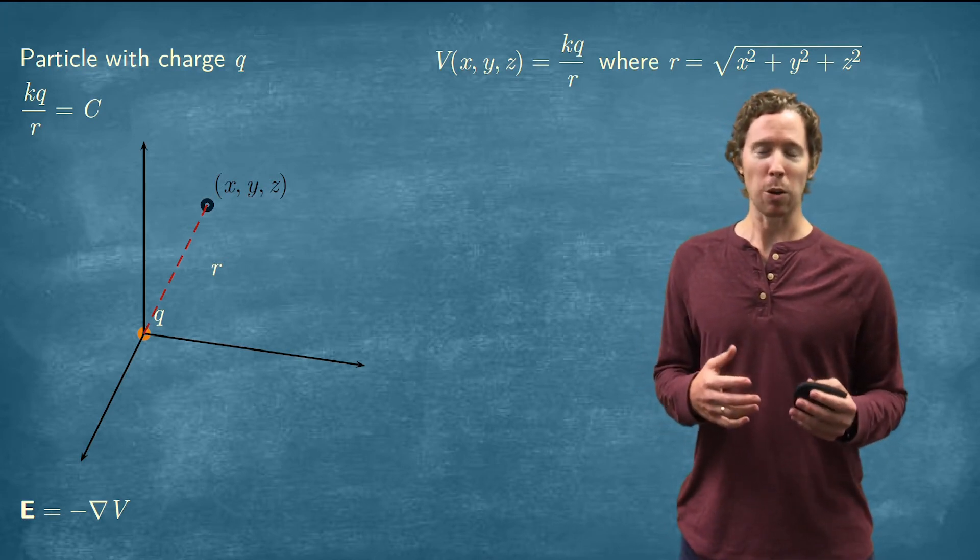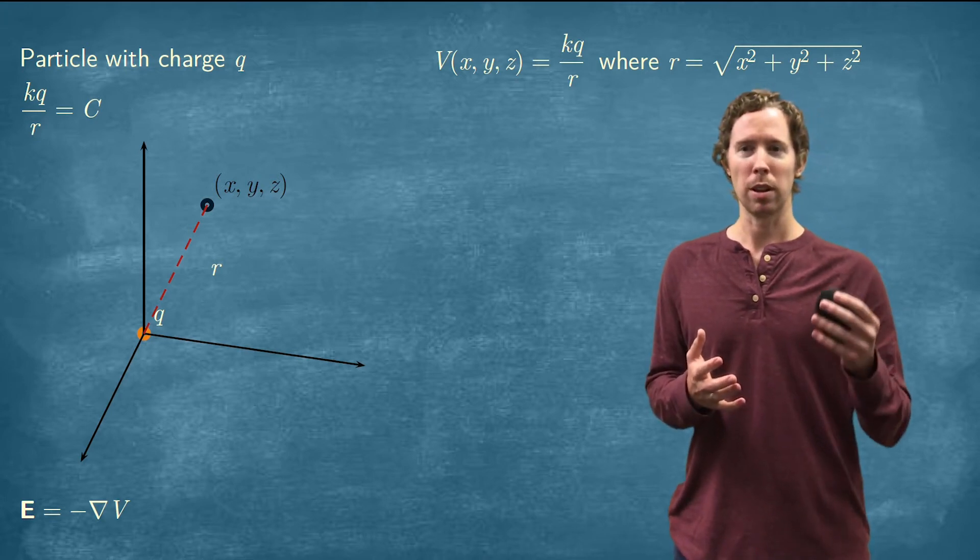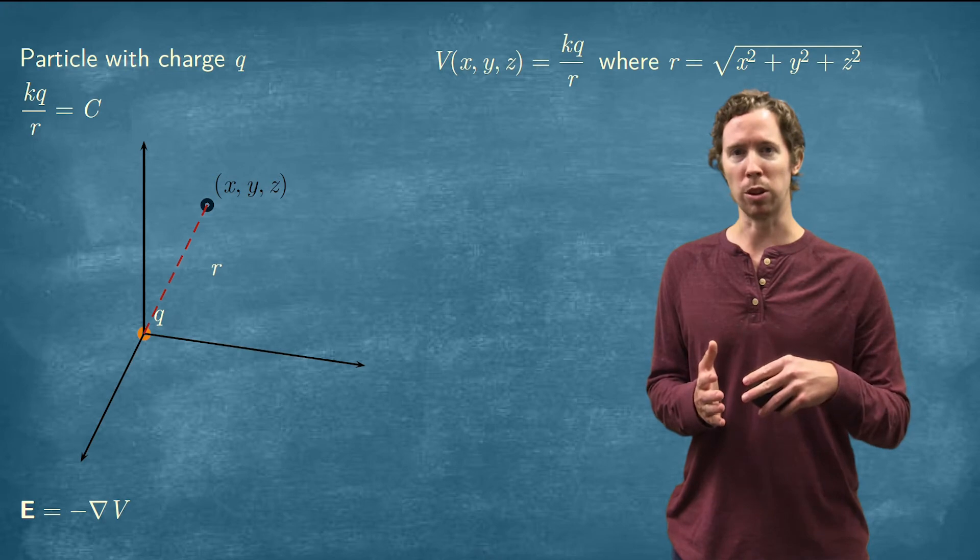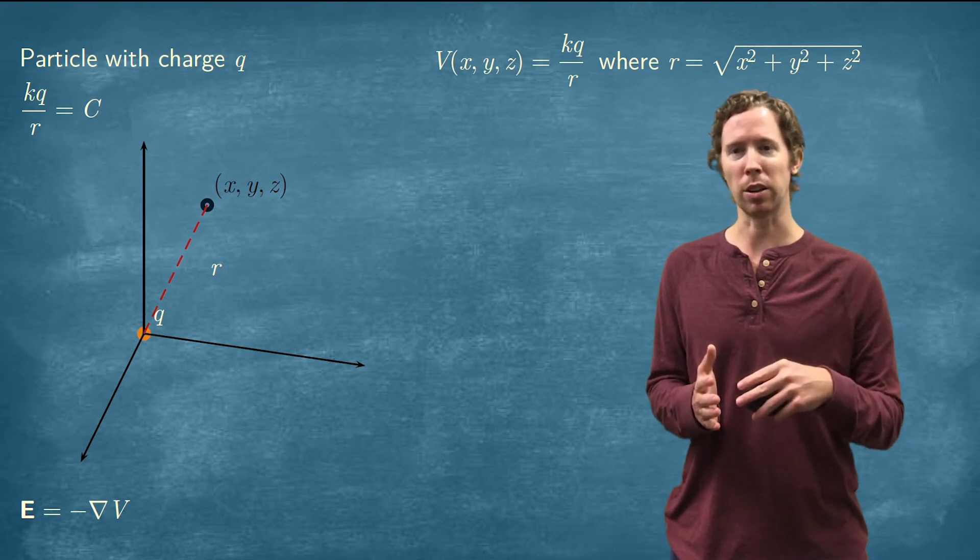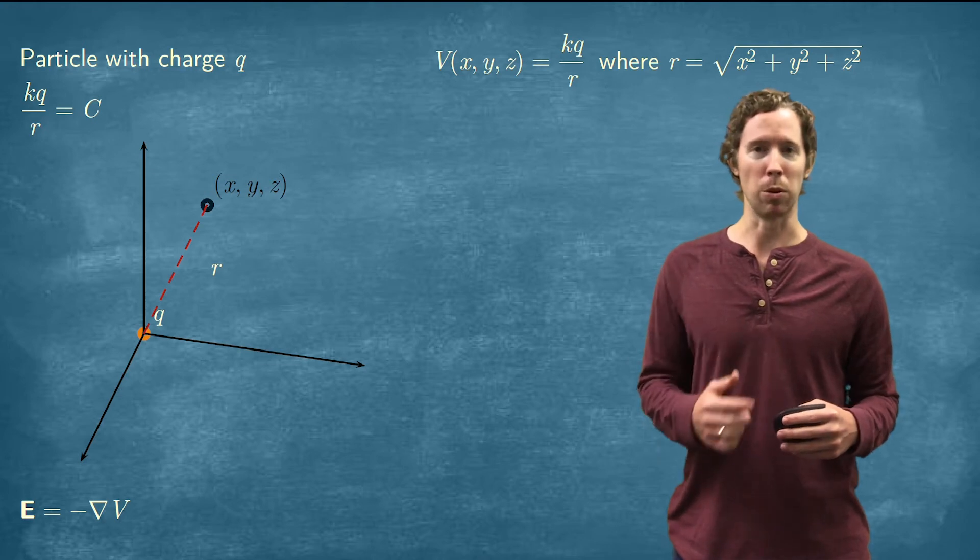So we expect that the gradient of V would point straight down in toward the origin. That's the direction of greatest increase, and minus that would point directly away from the origin.